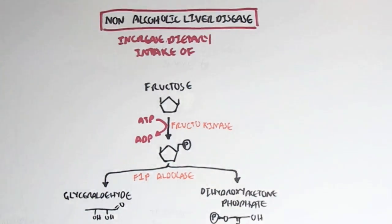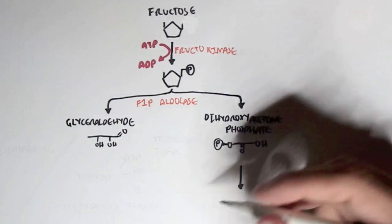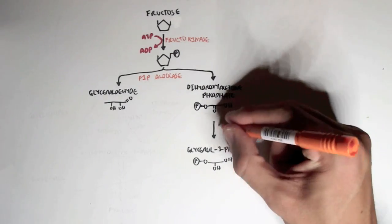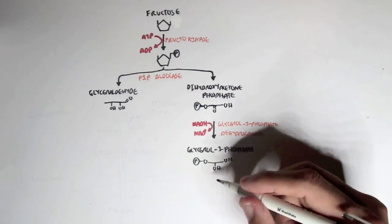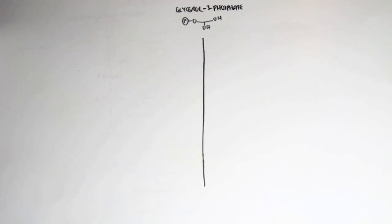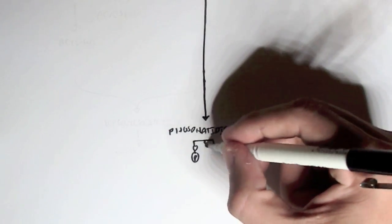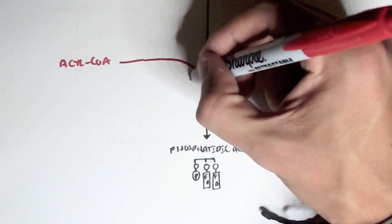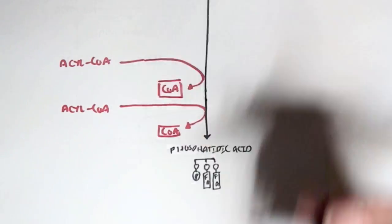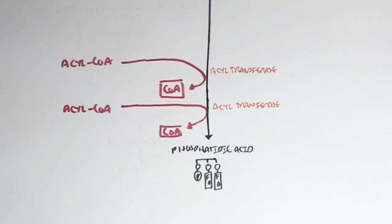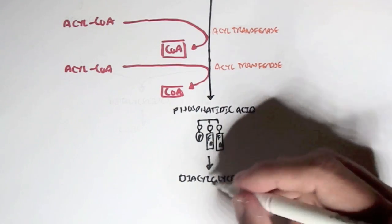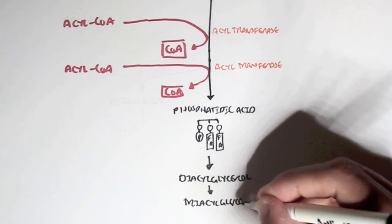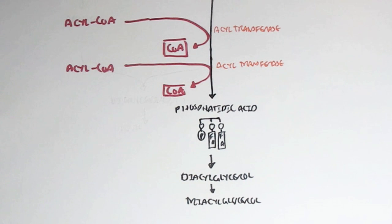Dihydroxyacetone phosphate is part of the glycolysis step. It can also convert to glycerol-3-phosphate with the enzyme glycerol-3-phosphate dehydrogenase — NADH is oxidized to NAD. Glycerol-3-phosphate can then convert to phosphatidic acid when two fatty acid groups, acyl-CoAs, are added with the enzyme acyltransferase. Phosphatidic acid can then convert to diacylglycerols and then triacylglycerols. This is what we see in non-alcoholic fatty liver disease — accumulation of fatty acids and triacylglycerols. But where do these acyl-CoAs come from?